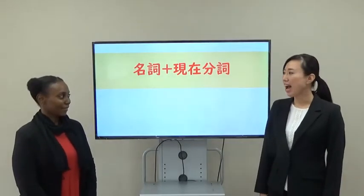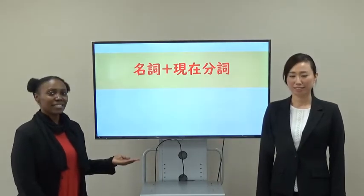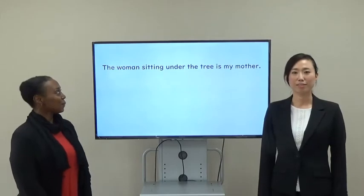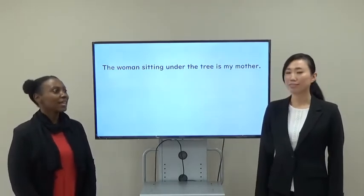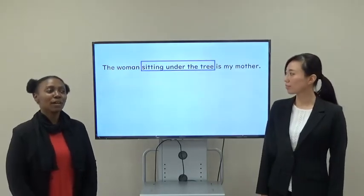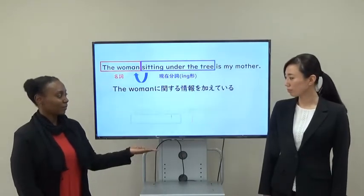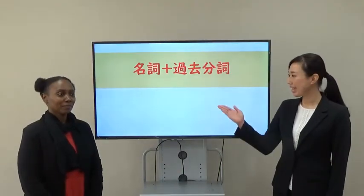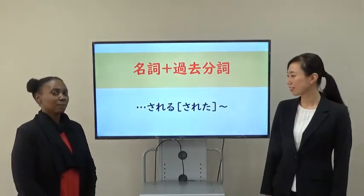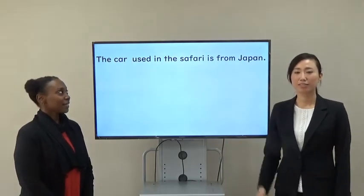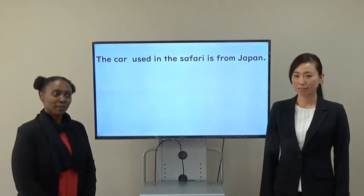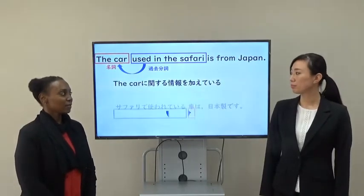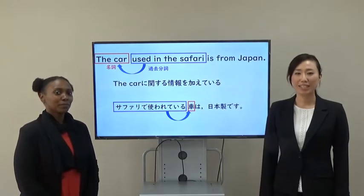Hey Cavite! How do we use this? Okay, it's very easy. You said this sentence, right? Yes. The woman sitting under the tree is my mother. Sitting under the tree is the information about the woman. It means the woman sitting under the tree is my mother. How about this? You said this sentence, right? Yes. The car used in the safari is from Japan. Used in the safari is the information about the car. Oh, I see. Thank you for teaching me. You're welcome.